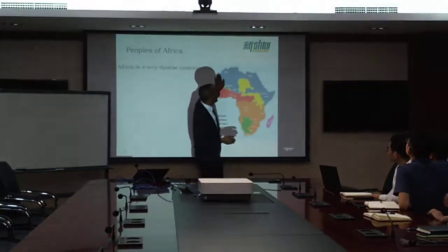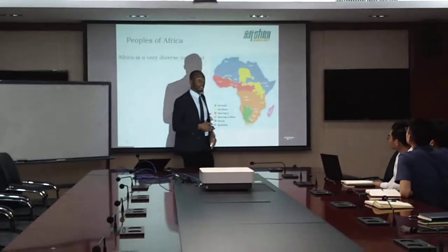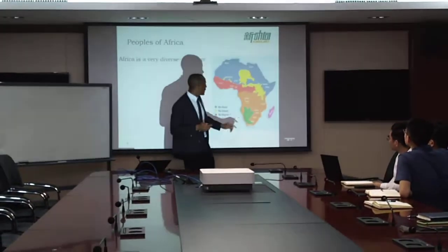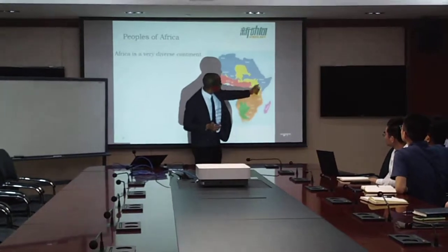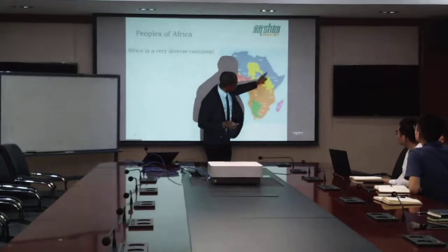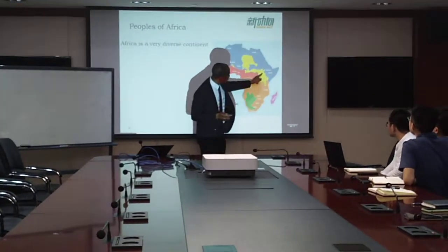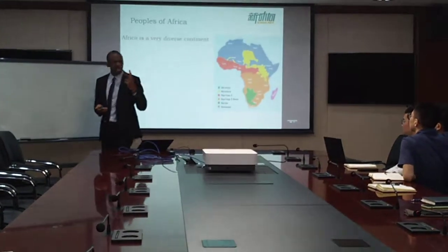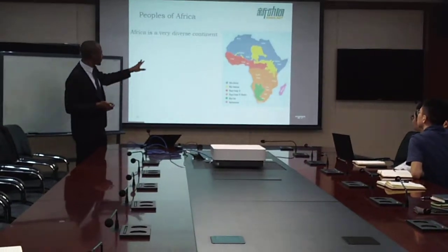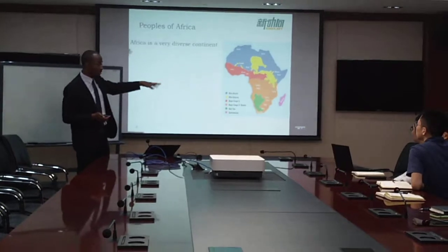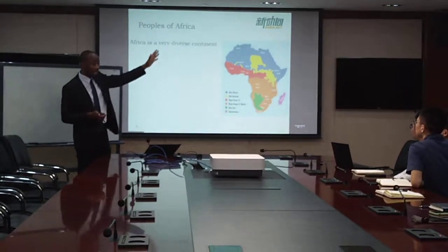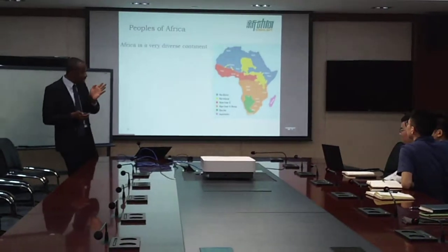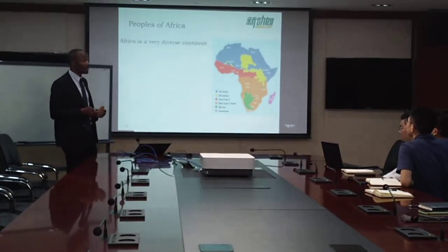You have the Northern part of Africa, which is composed of a different kind of people. And then you have along the Nile River and the Eastern part of Africa — they do share similarities. So three major types of people: the ones from the West, Center, and South; the ones in the North; and the ones around the Nile River and towards the Eastern part of Africa.